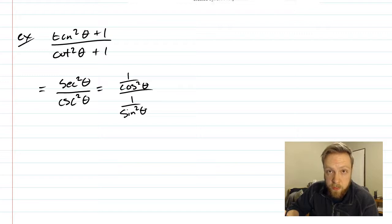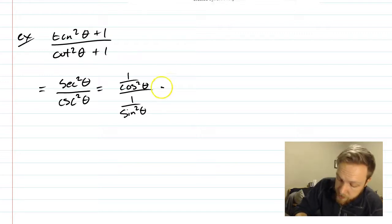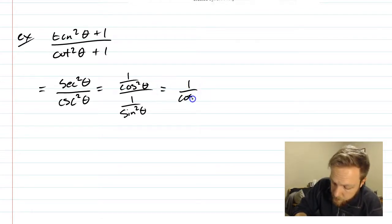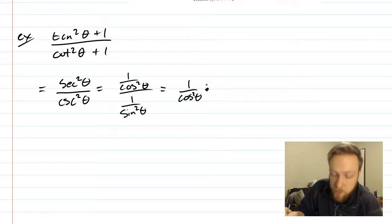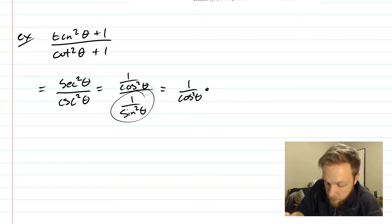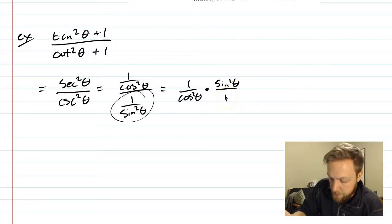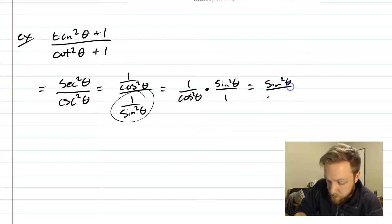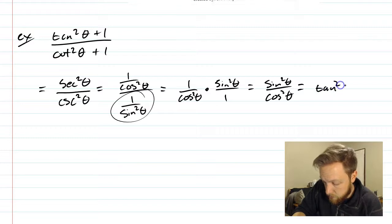And then we're going to do the keep switch flip. We're going to keep the one over cosine squared theta, switch it to multiplication, then we're going to times by the reciprocal of what we're actually dividing by. So this is going to be sine squared theta all over one, which turns out to be just sine squared over cosine squared, which is actually tan squared theta.